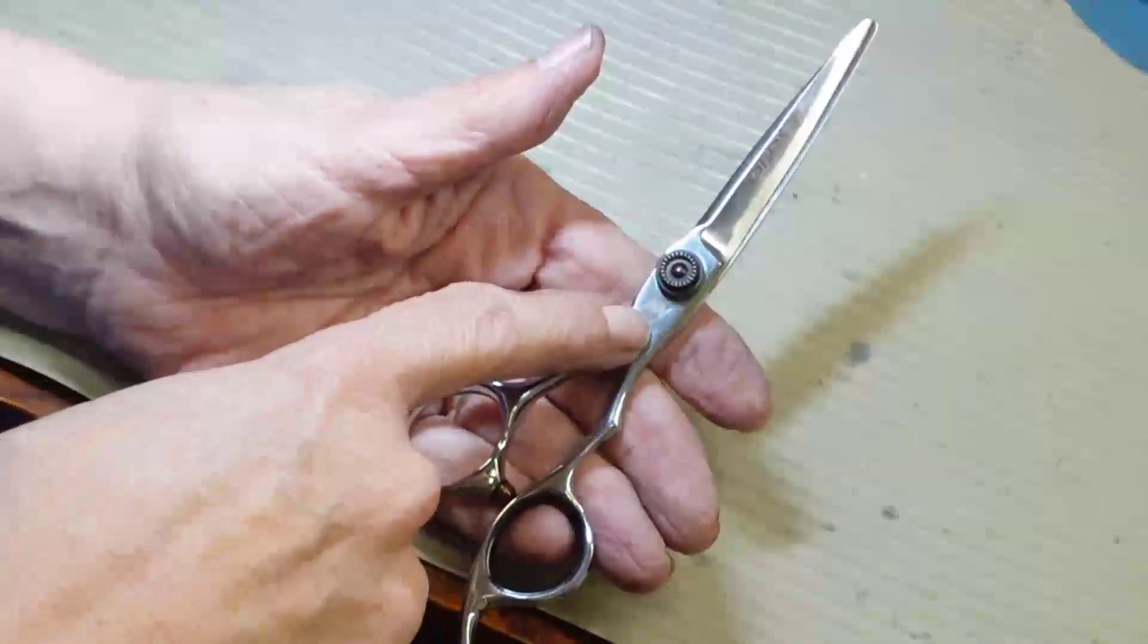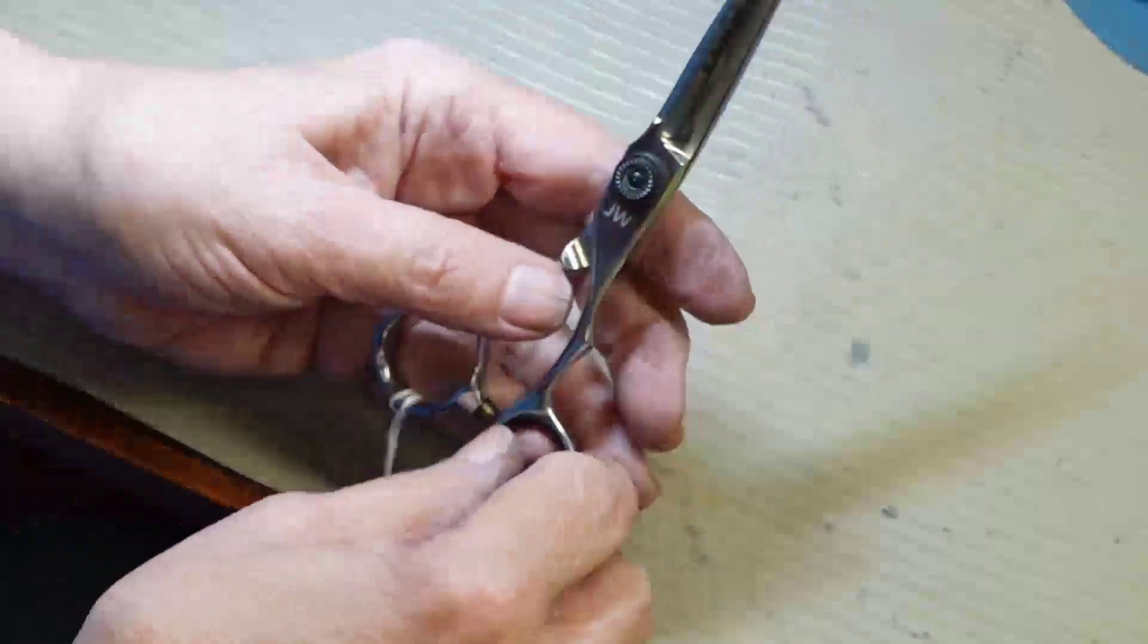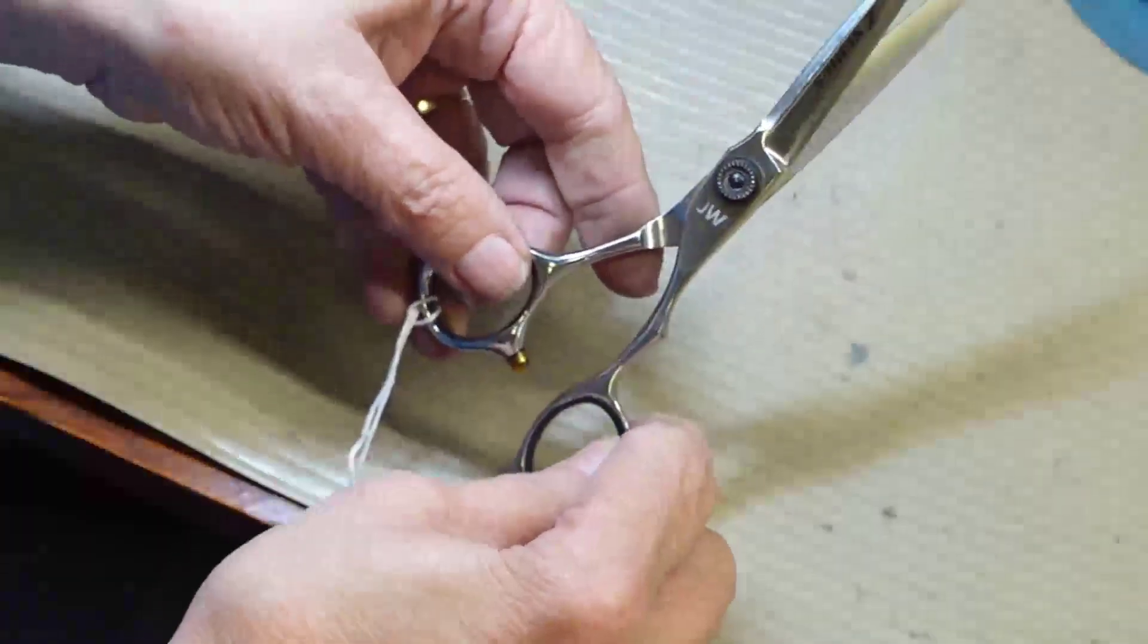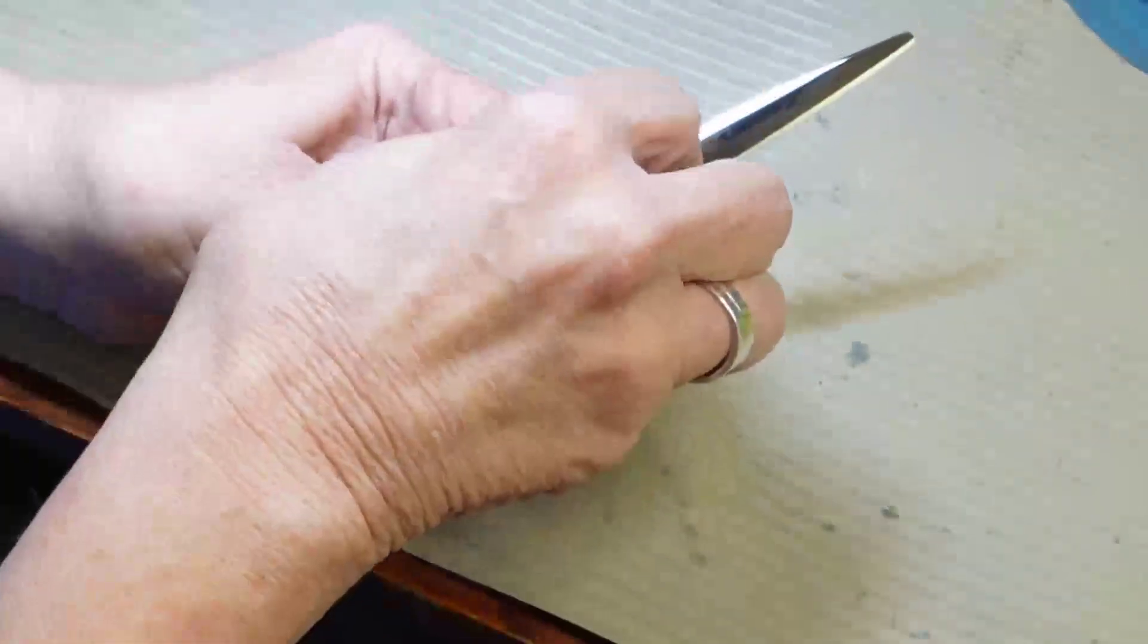Now if you're a sharpener, you should be able to right away recognize there is a problem here. The number one problem is the shears won't open and close, but you see this screw? It's on upside down.